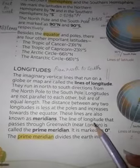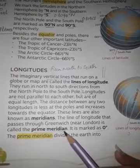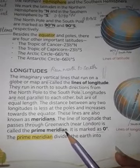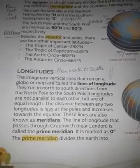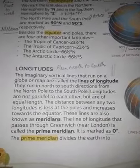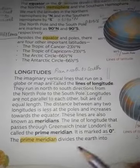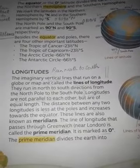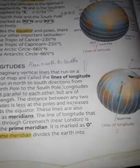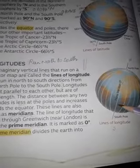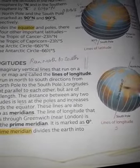The line of longitude that passes through Greenwich, near London, is called the prime meridian. This is the most important longitude line. We mark it at zero degrees, just as we mark the equator.